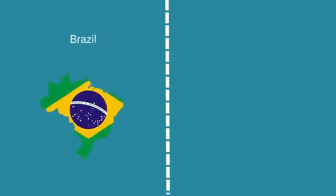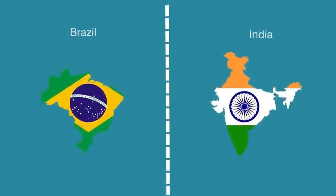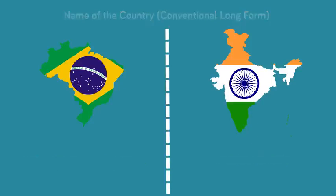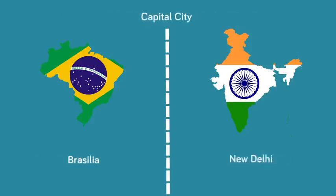Location and extent. Let's understand a few things about Brazil and India. The long form of Brazil is Federative Republic of Brazil. The long form of India is Republic of India. The capital city of Brazil is Brasilia. The capital city of India is New Delhi.